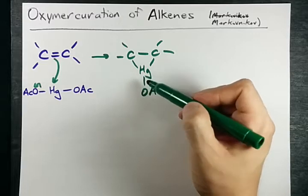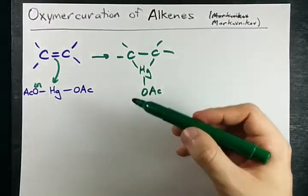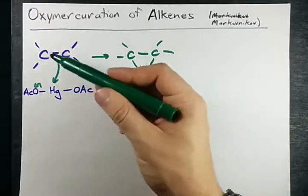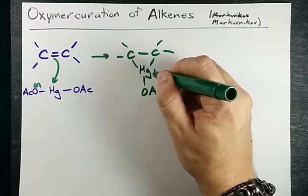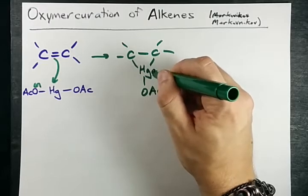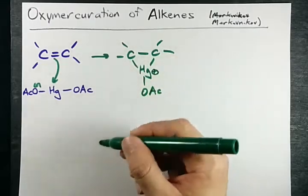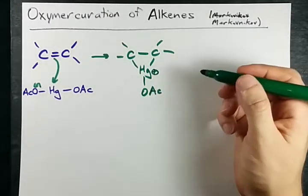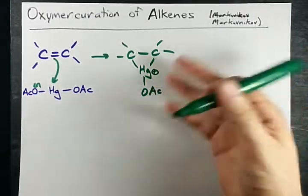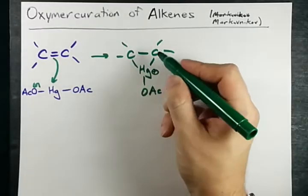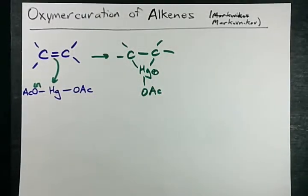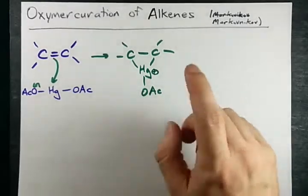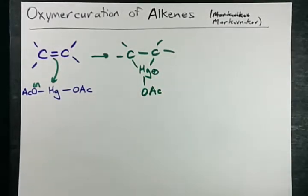This might remind you of how Br₂ adds across the double bond. This is called a mercurinium ion — the other one's called a brominium ion. It's just how it goes. Long story short, it's a triangle intermediate. That should help you remember what happens.